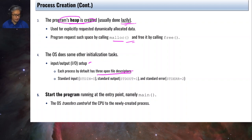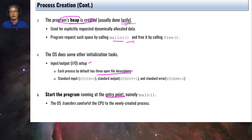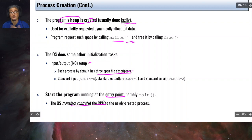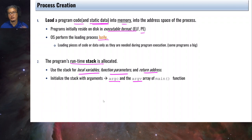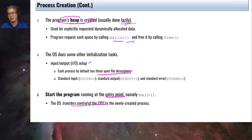Eventually, the entry point of the program is called and execution begins. At this point, the OS will no longer be in control — control is transferred to the process, and the process can begin its execution. So those are the five steps: one, loading; two, creating the runtime stack; three, creating the heap; four, initialization of I/O devices like stdin, stdout, and stderr; and five, transferring control to the program's entry point.